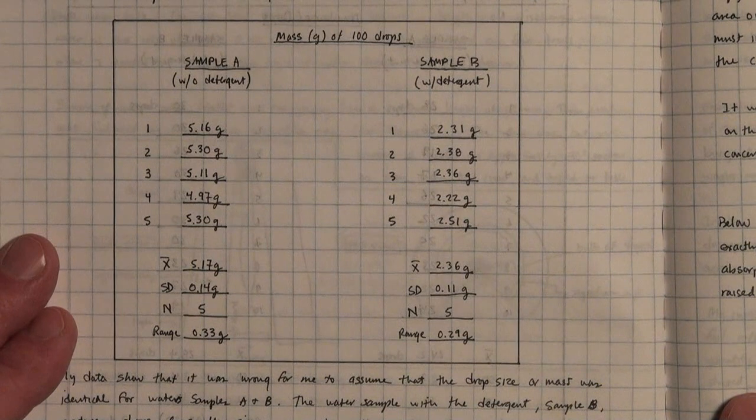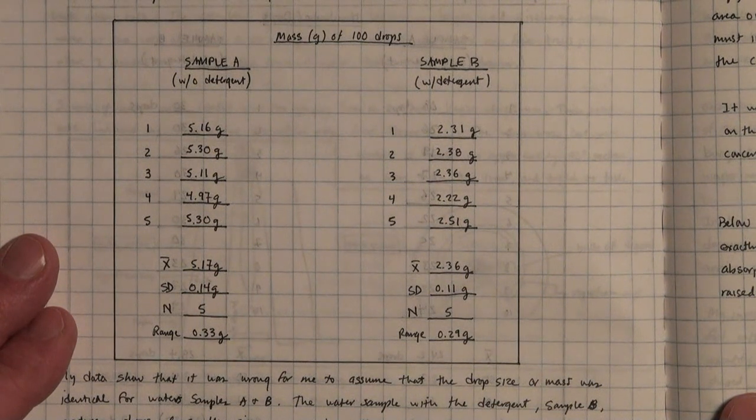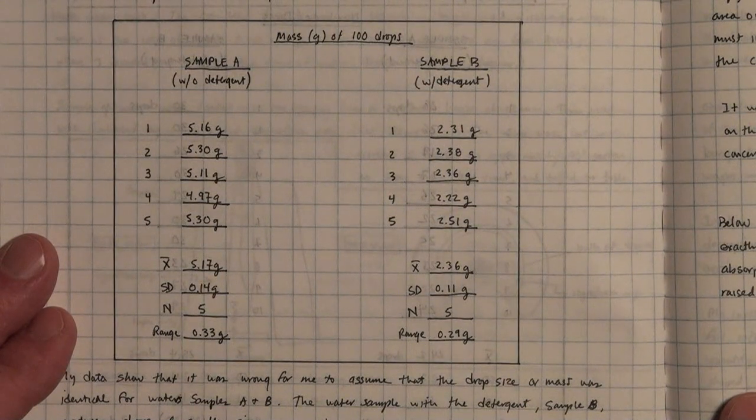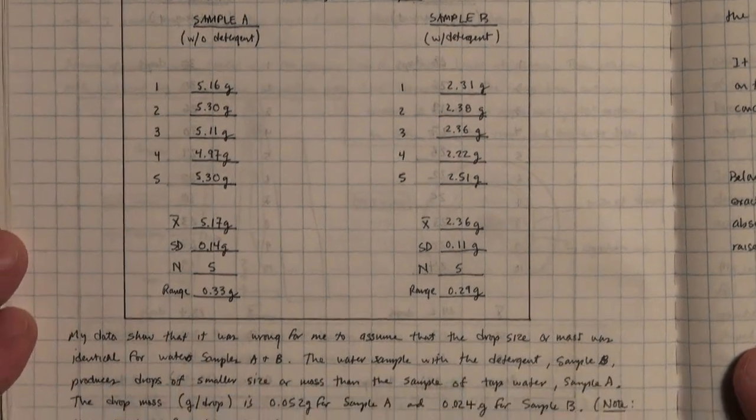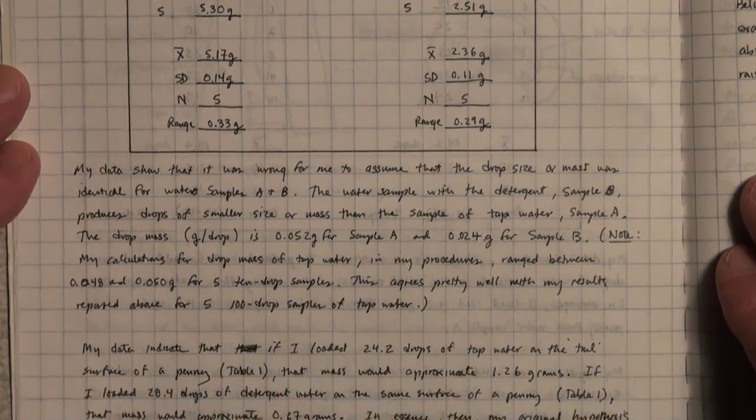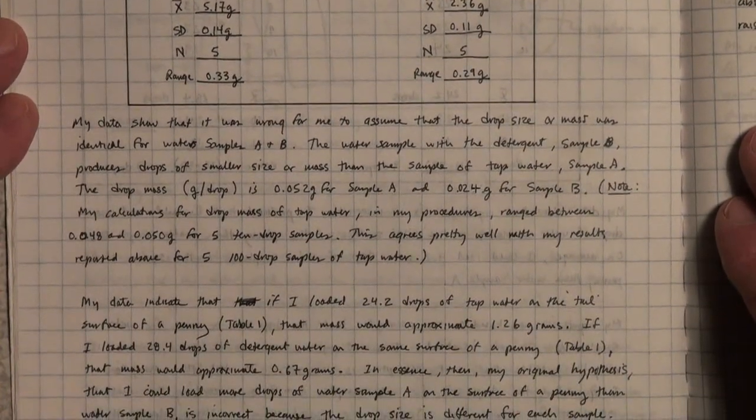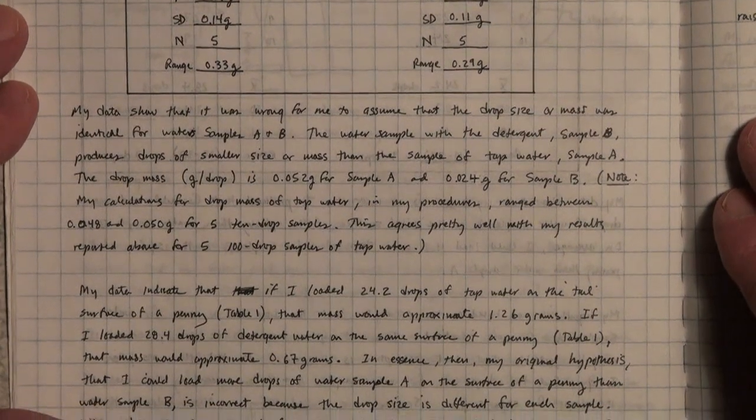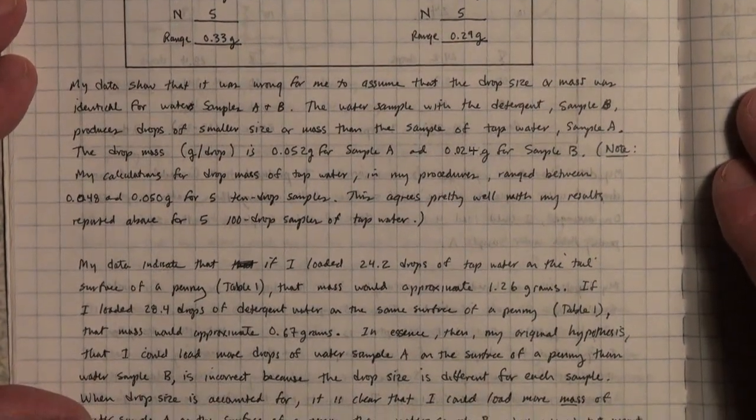The drop mass, that is grams per drop, is 0.052 for sample A and 0.024 for sample B. Note that my calculations for drop mass of tap water in my procedures ranged a little bit for 5-10 drop samples, but this agrees pretty well with my results reported above for 5-100 drop samples of tap water.